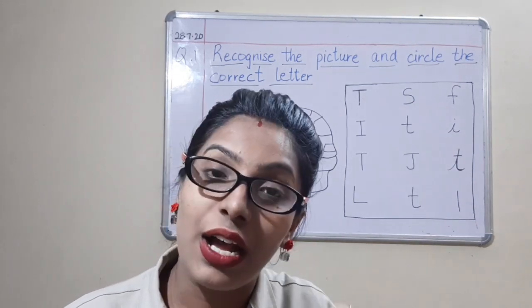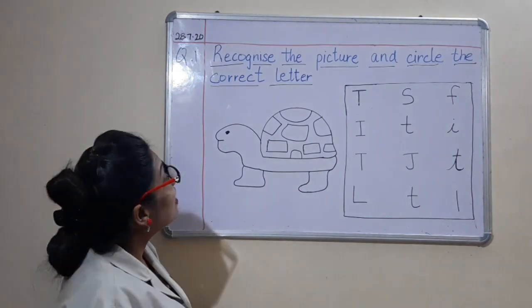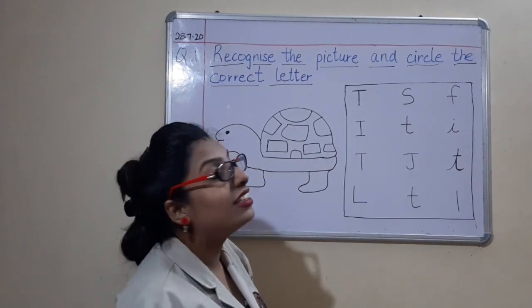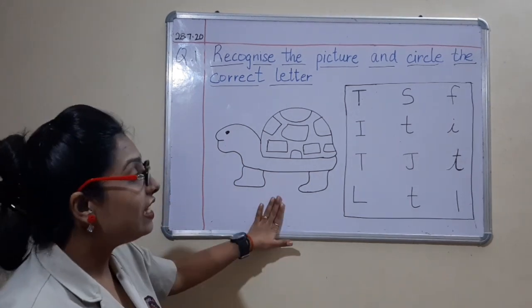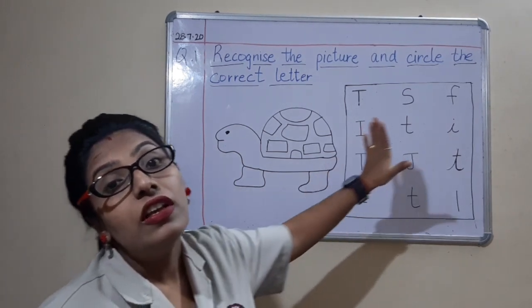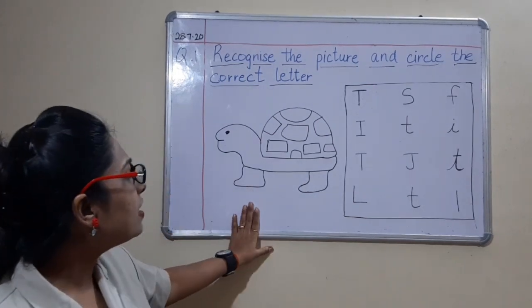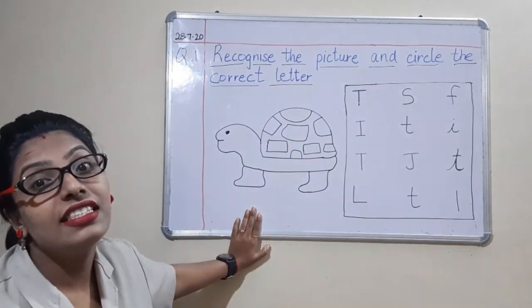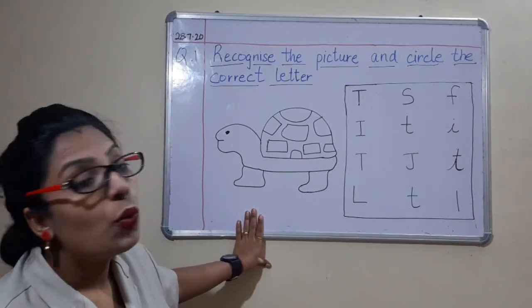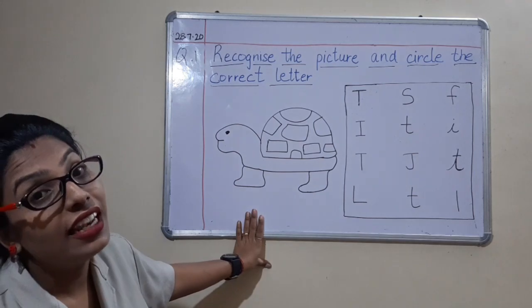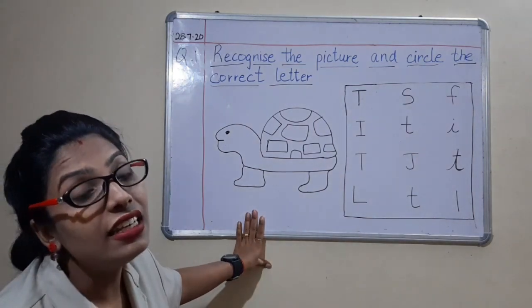Shall we see what is the first question? Question number one: recognize the picture and circle the correct letter. What do you have to do? You have to see the picture and circle the letter related to it. What is this picture? Yes, this is a turtle. So the sound is T, the letter will be T, and we have to circle the letter T.